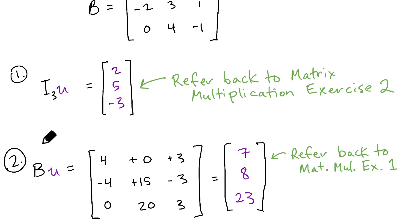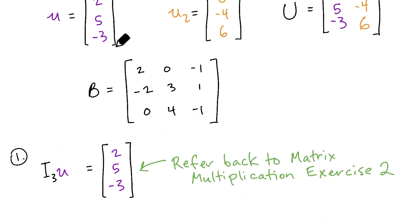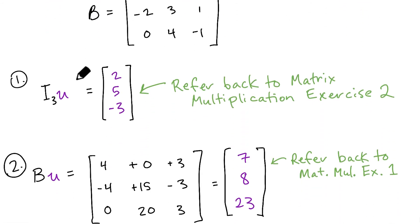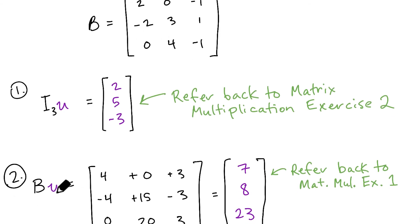For exercise 2, where we apply the matrix B to the vector u, this does require us to do some matrix multiplication. Again, referring back to the matrix multiplication topic from earlier in this series, the exercise right before this one should clear up exactly how to perform this matrix multiplication. So we end up doing a series of dot products and then summing together through those dot product operations. We get this final answer of 7, 8, and 23 of this vector here as a result of applying the matrix B to the vector u.